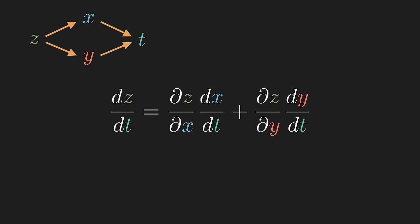Notice how we use the total derivative whenever there is a single variable dependence, as in the case for dx/dt and dy/dt. And we use dz/dt as well, since every arrow eventually leads to a single variable t.